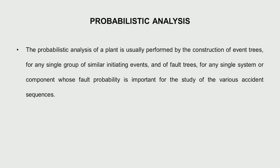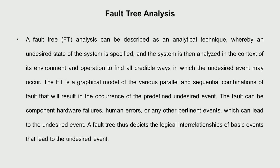How do we go about the probabilistic analysis? Here we talk about event trees and fault trees. For a similar type of faults or initiating events, we see what the consequence on the plant is or what the core damage frequency is — that is the event tree. For a single system to fail, what is the probability that single system can fail — that is the fault tree. A set of events lead to the event tree and finally the core damage frequency.